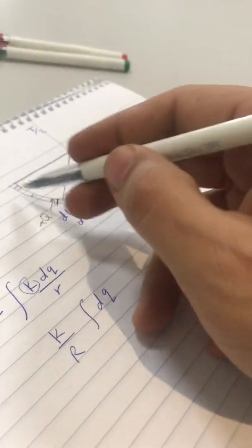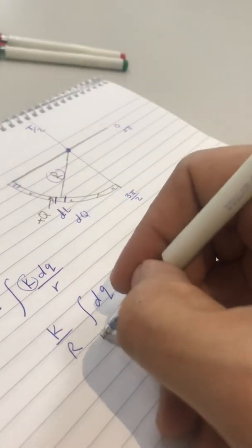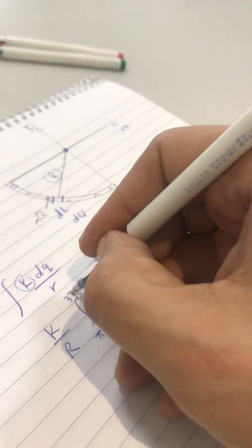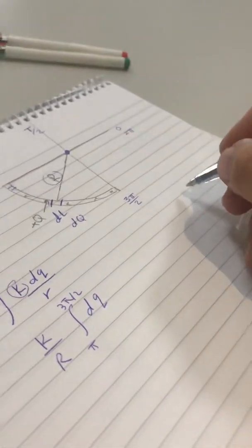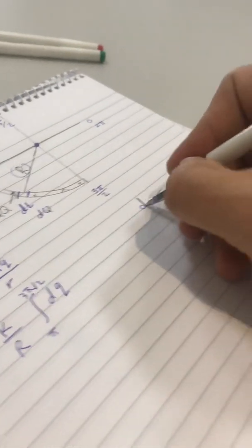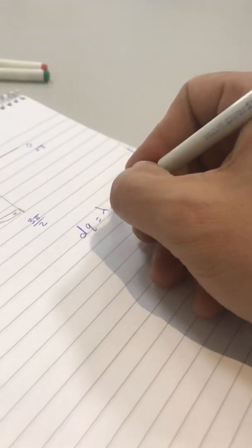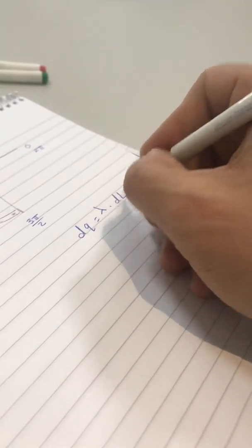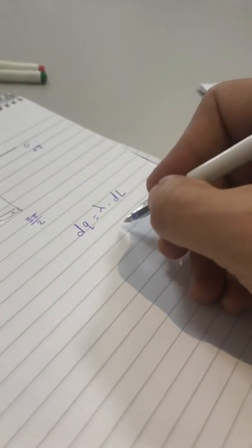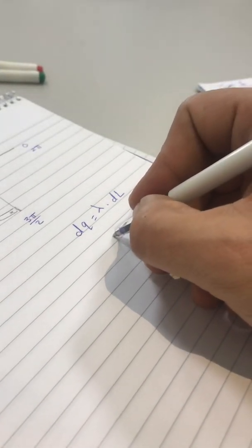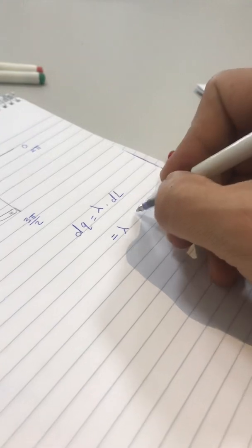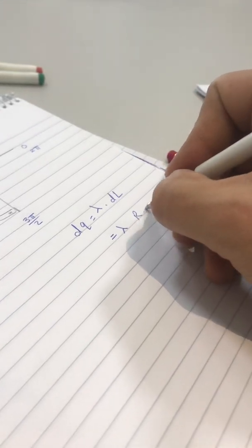So, the integration here will go from Pi to 3 Pi over 2. As you know, the DQ equals Lambda times DL. And the DL, as I told you earlier, the DL is R times D Theta.